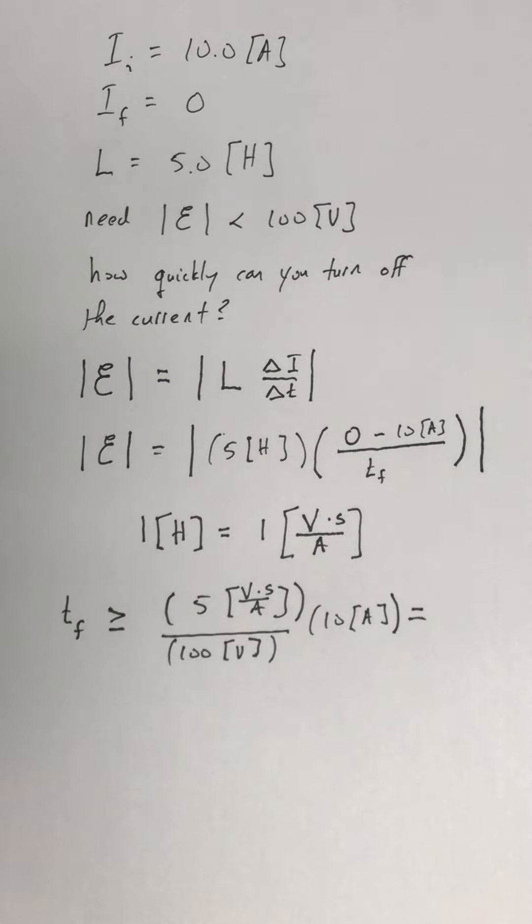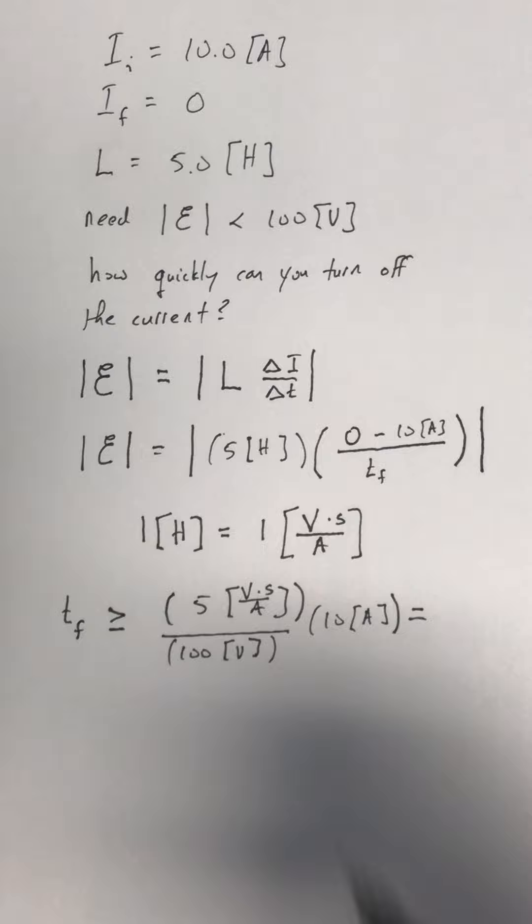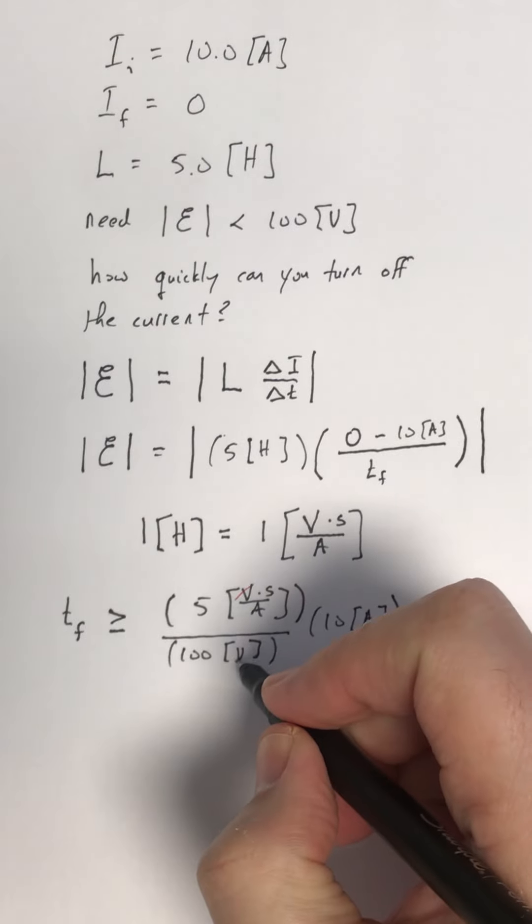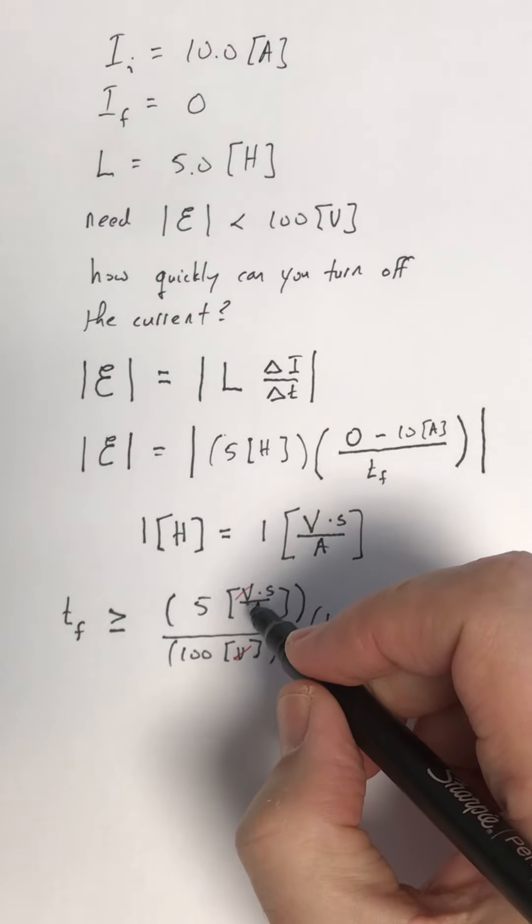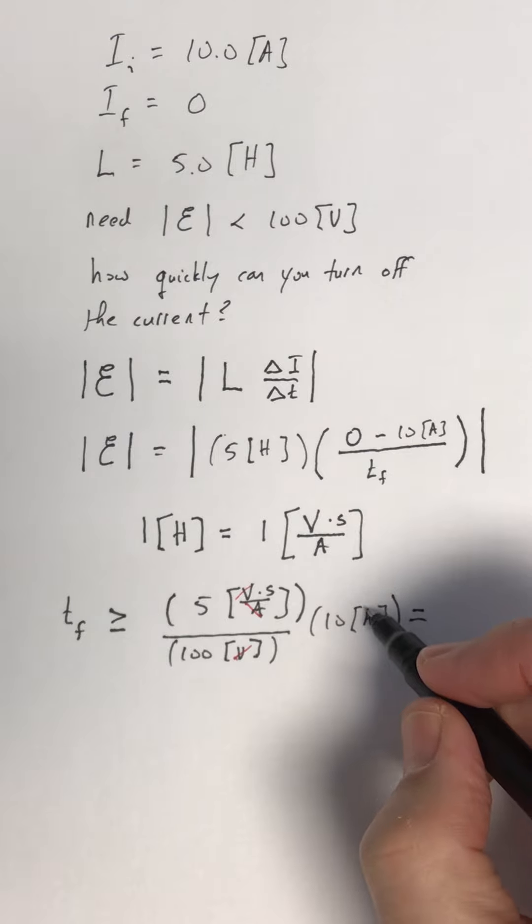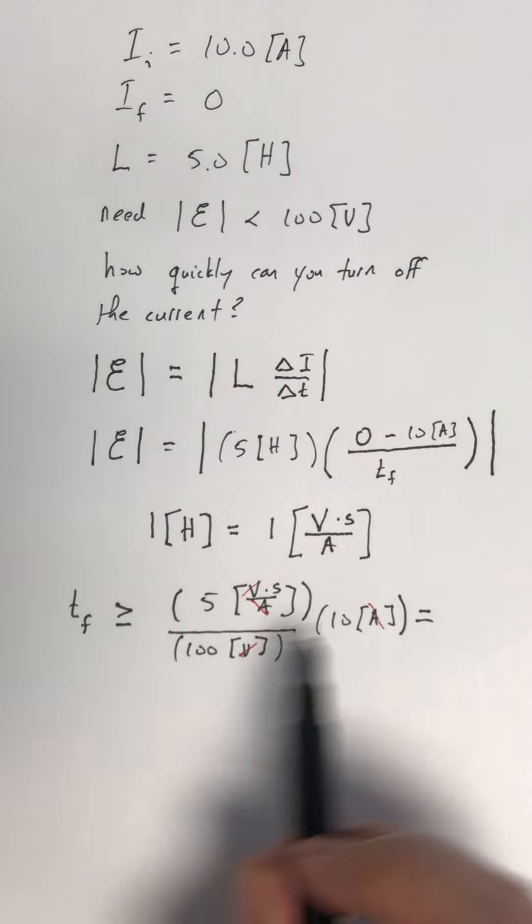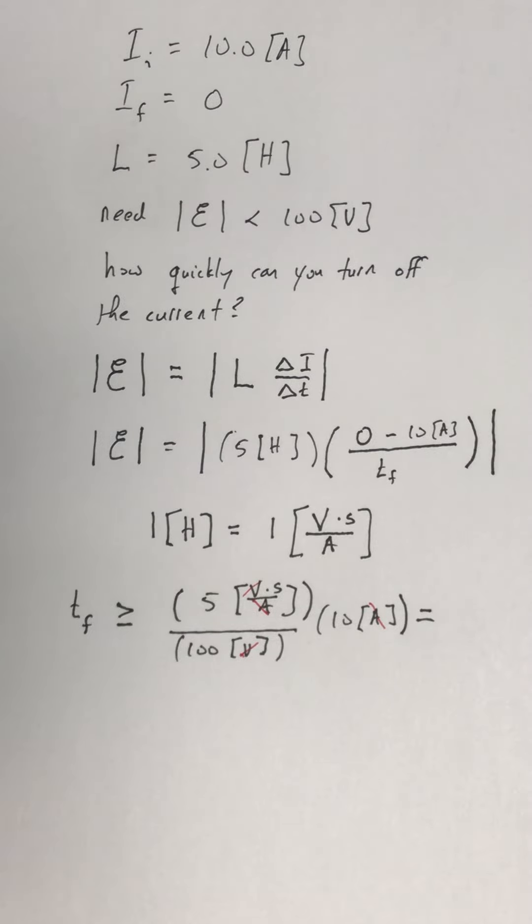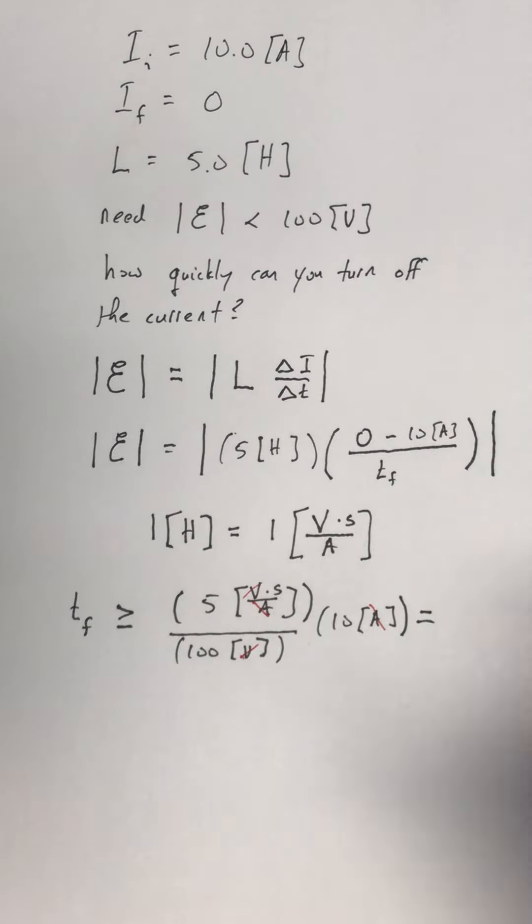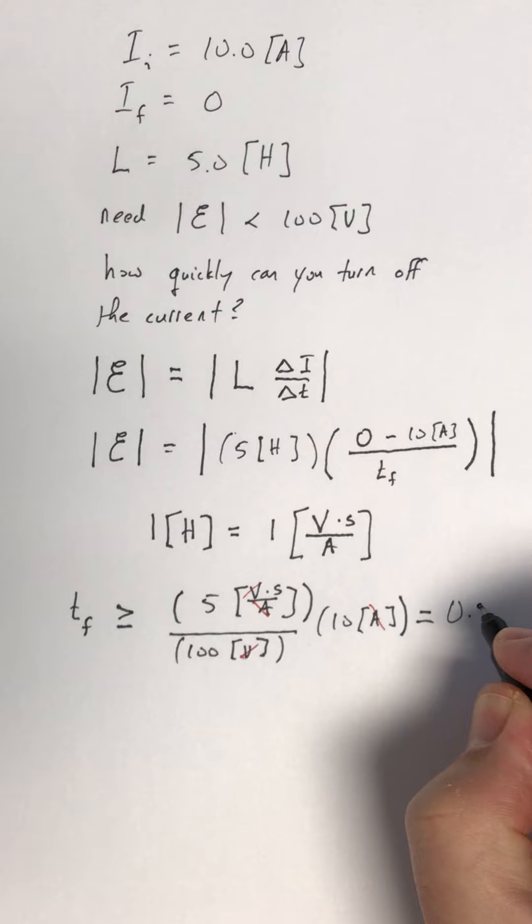And just make sure that all those units work out correctly. I have a volt over a volt and this is going to give me an amp over an amp. So this is going to be 50 over 100 seconds or 0.5 seconds.